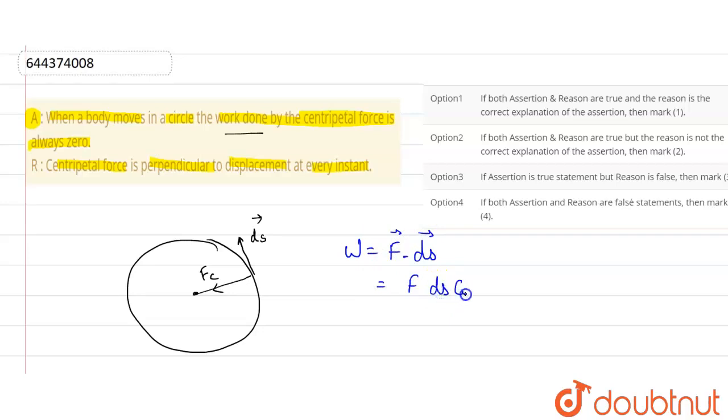equal to F ds cos θ. Here theta is this angle which is equal to 90 degrees, and cos 90 degrees is equal to zero. So we can say that work done is equal to zero.